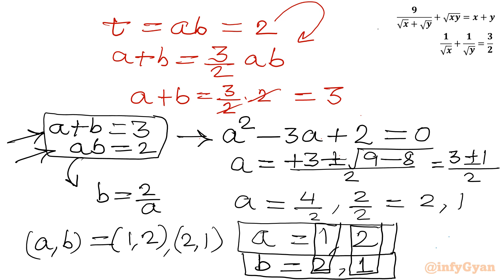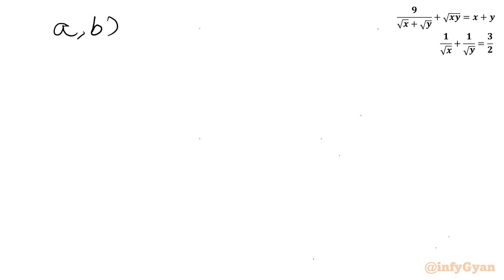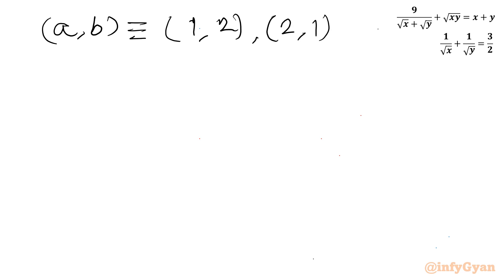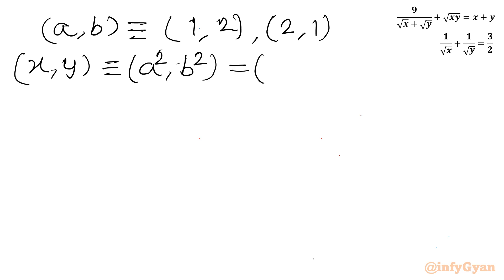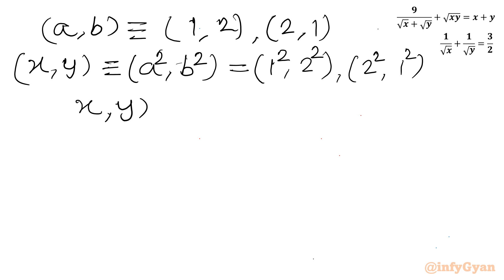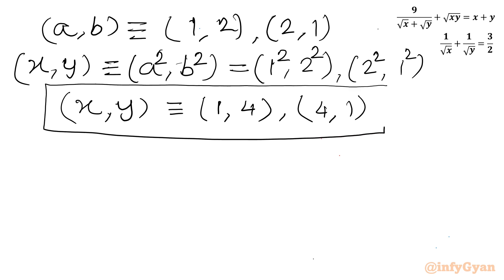Now converting back: x = a² and y = b². For (a, b) = (1, 2): x = 1, y = 4. For (a, b) = (2, 1): x = 4, y = 1. So the final answer is (x, y) = (1, 4) and (4, 1). This brings the end of the video — thank you for watching, don't forget to like, share and subscribe. Bye-bye, good luck, take care!